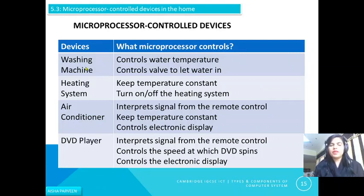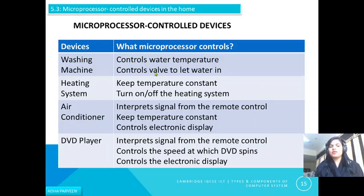Let's discuss a few microprocessor control devices and what the microprocessor controls in those devices. For example, in a washing machine, the microprocessor controls the water temperature and controls the valve to let water in or out.